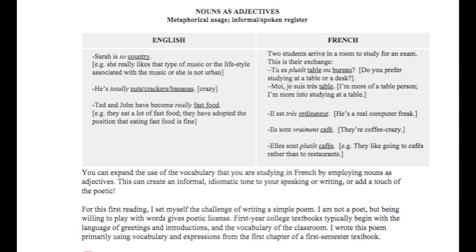So this little exchange at the very top in the French columns: two students arrive in a room to study for an exam. 'Tu es plutôt table ou bureau?' — literally, 'Are you more table or desk?' meaning, do you prefer studying at a table or a desk? 'Moi, je suis très table.' — 'Me, I'm very table,' meaning I'm more of a table person, I prefer studying at a table. Any noun can be used adjectivally in the right context to express attributive meaning.